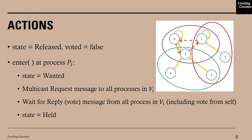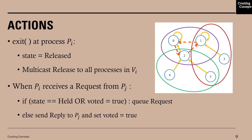After it gets a reply from all three, its state will be changed to held, meaning it is currently in the critical section. For the exit function, process Pi releases control of the critical section — so Pi (process 0) changes its state to released and multicasts the release message to all other processes in its voting set, that is processes 1 and 2.